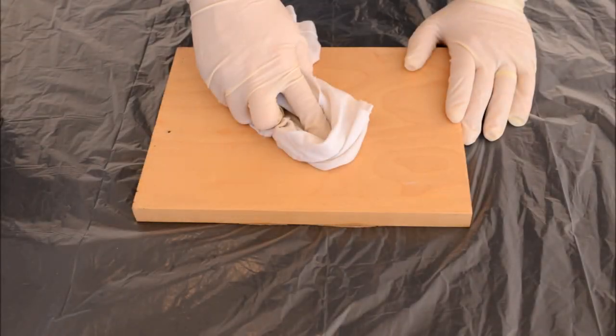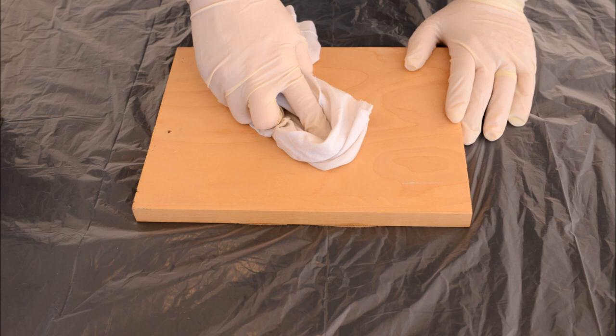The first and most important step in laminating is surface preparation. Do not skip this step. Use acetone to wipe down the area that is to be laminated. This removes any dust or grease from the surface.